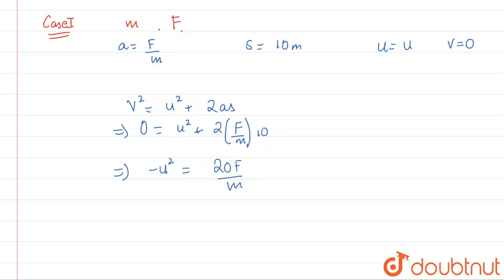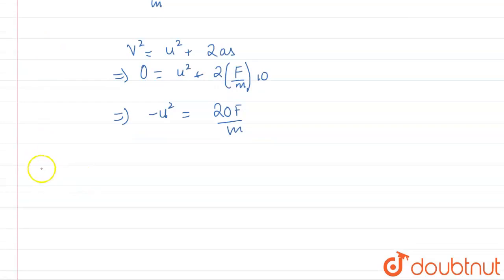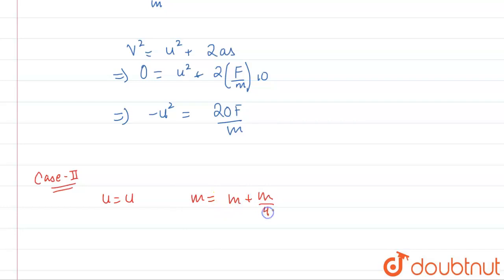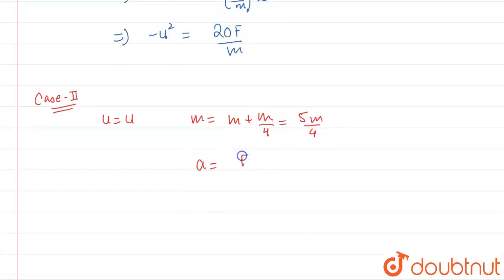For Case 2, the initial velocity is again u. The mass is now 25 percent more, which means m plus m/4, giving us 5m/4. So the new acceleration is f divided by 5m/4, which equals 4f/5m. The final velocity is zero and we need to find s.